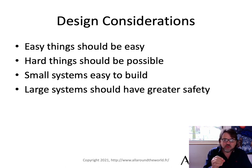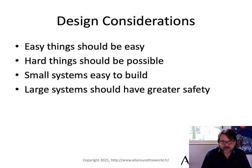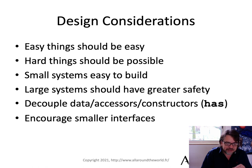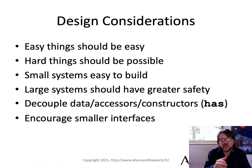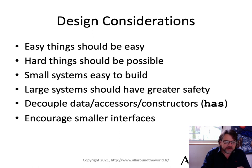Small systems should be easy to build, but large systems must have greater safety. I hit this all the time with clients — they're slinging data all over the place, and it's very hard to validate that data. You have mutable objects, so you pass an object around, something changes its state, something else doesn't know it, and things go boom. We want to make it easier to build safe, large systems. We've been trying to decouple data from the accessors and constructors, and we want to encourage smaller interfaces so that we don't offer promiscuous data.